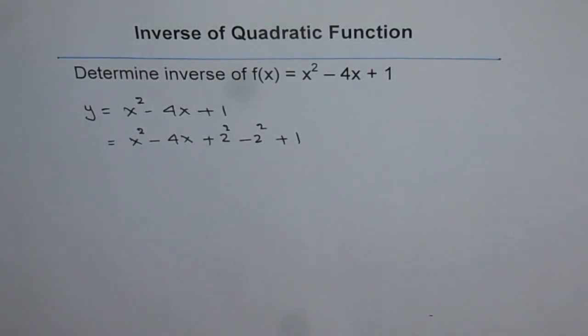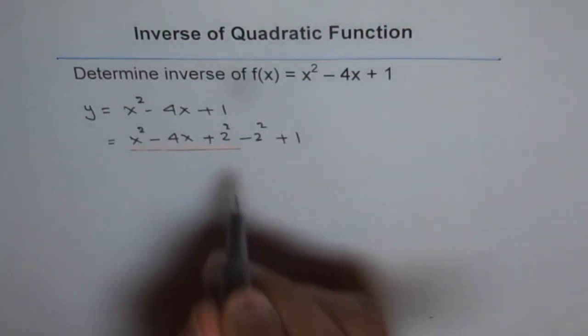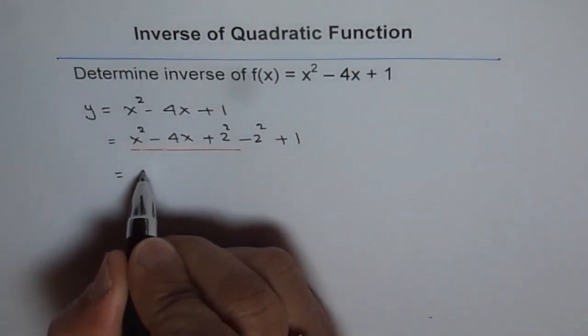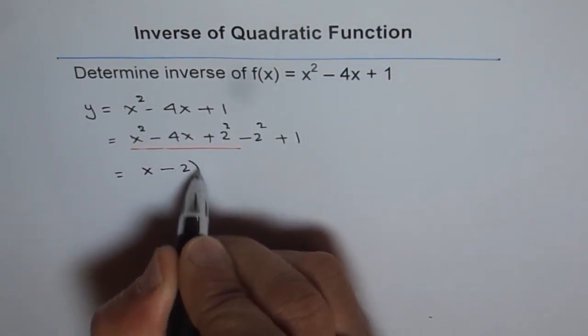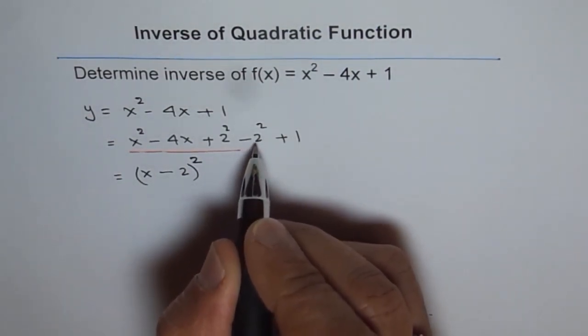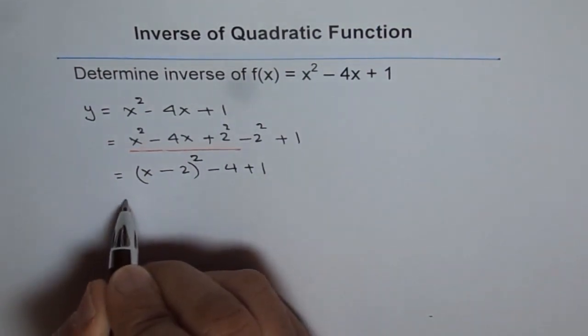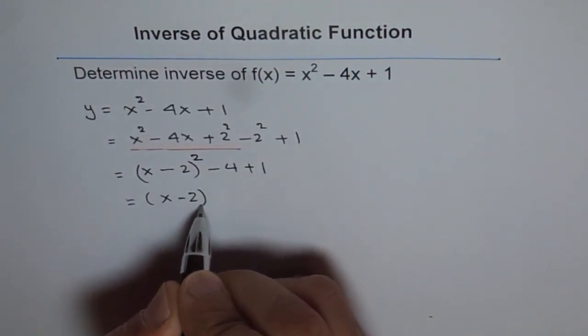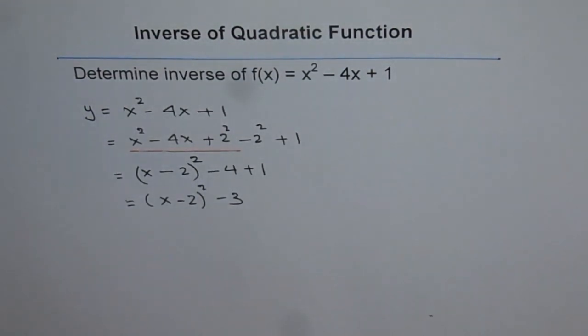So we get x² - 4x + 2² - 2². Now in this particular thing, first three terms form a perfect square. So we can write this as x minus sign from here and plus 2 from there: (x - 2)². And we are left with these terms which is -2² which is -4 + 1. And that gives us (x - 2)² - 3. So that is y.